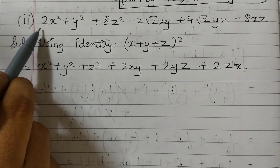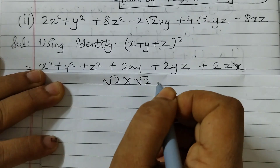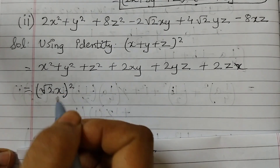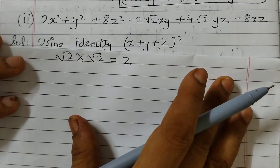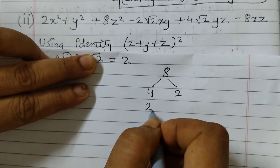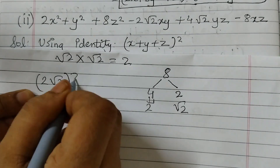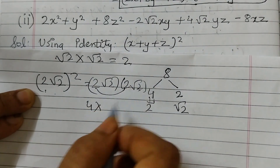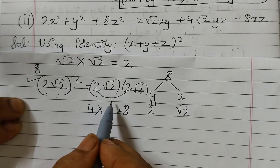Here, 2 is not a perfect square, but √2 × √2 = 2, so we write 2x² as (√2·x)². y² is simply y². For 8z²: 8 = 4×2, and since 4 = 2² and 2 = (√2)², we get 8 = (2√2)². You can verify: 2√2 × 2√2 = 4×2 = 8. So we write 8z² as (2√2·z)².